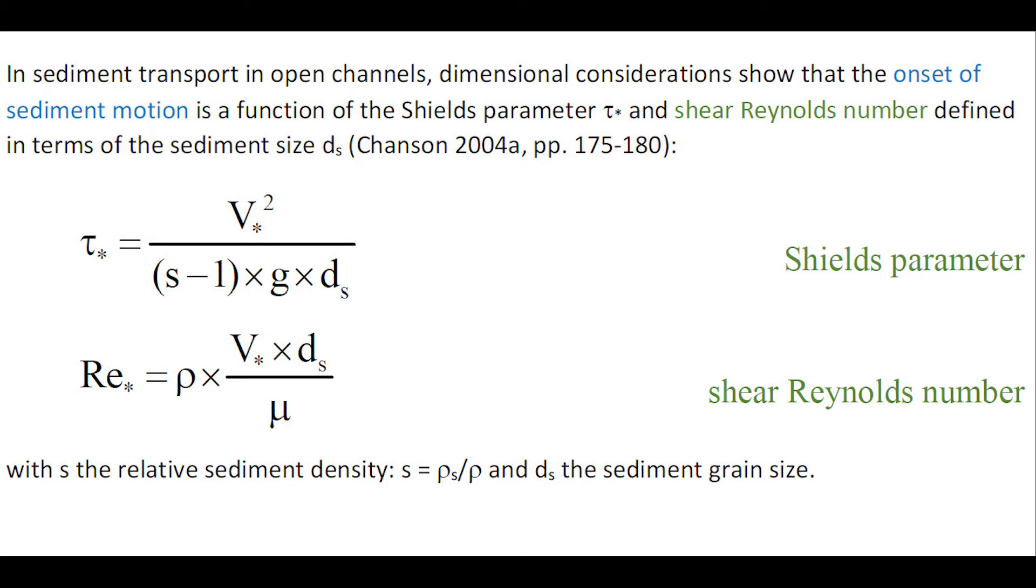In sediment transport in open channels, dimensional consideration shows that the onset of sediment motion is a function of the Shields parameter and the shear Reynolds number, defined in terms of the sediment size.